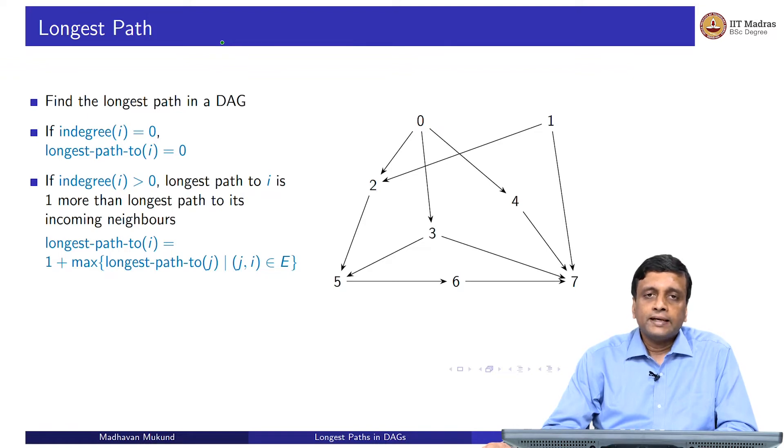If it is not 0, then it has some incoming edges. If I knew how long it took to come there, the longest path to each of the incoming edges, then I can take the maximum among these. That is the constraint now. I have to wait for all of them to be completed. I can take the one which is going to get completed latest, the maximum among the longest paths to all the incoming edges, and then my longest path will be 1 plus that.